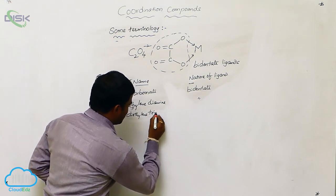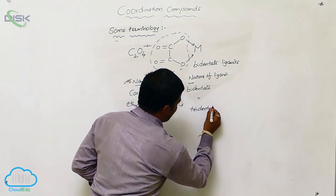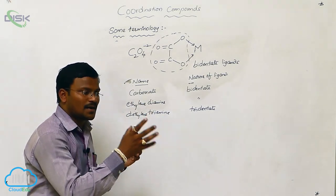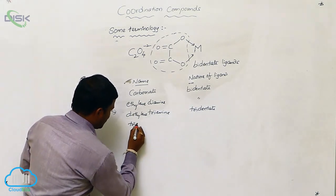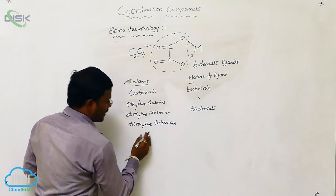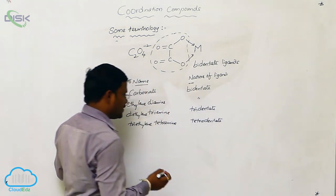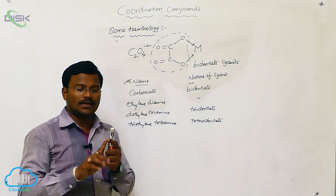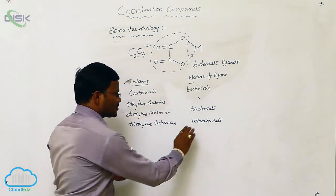Diethylene triamine is a tridentate ligand, meaning three atoms in the single ligand can donate non-bonding pair of electrons simultaneously to produce coordination covalent bonds with a single metal atom. Similarly, triethylene tetramine is a tetradentate ligand, having four amine groups where each nitrogen donates its lone pair simultaneously to the same metal.